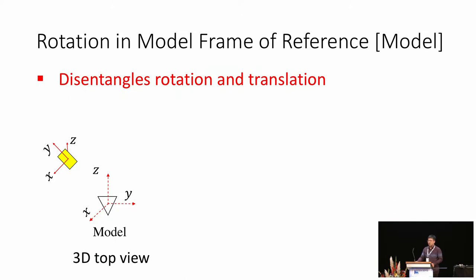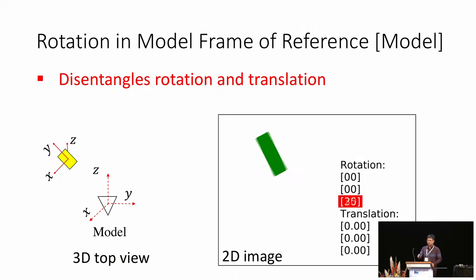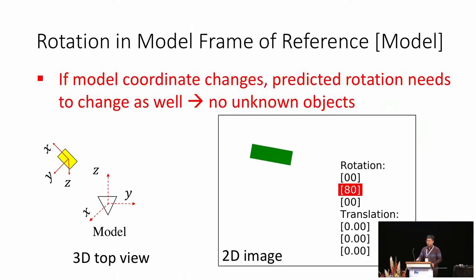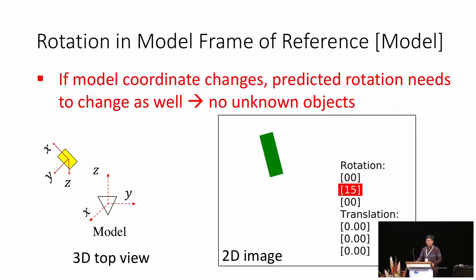One simple way to disentangle rotation and translation is to do rotation in the frame of reference specified for the object model, as you can see here. However, if the model coordinate changes, the prediction needs to be changed accordingly. It becomes worse if we have two similar objects with different model frames, since we need to distinguish them. Like in the animation, the rectangle has a different model frame, and the required rotation vector for the same operation becomes completely different.